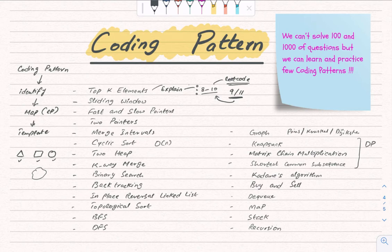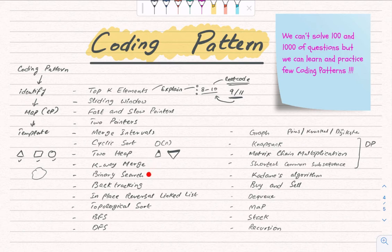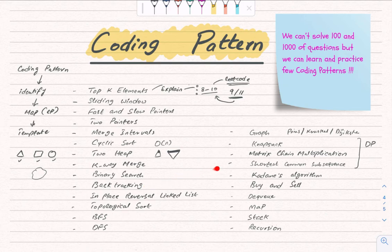Then we'll cover Two Heap — used when a question needs to be divided into a min-heap and max-heap to find specific elements. After that: K-Way Merge, Binary Search — including questions that don't explicitly say 'binary search' but require us to apply it — and Backtracking, which can often be converted to recursion, then memoization, then solved with dynamic programming.